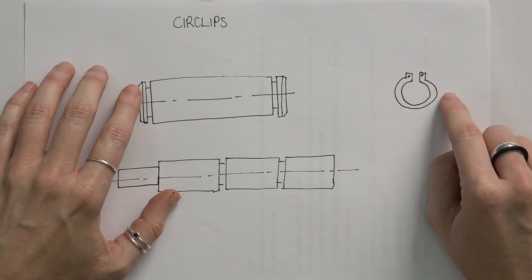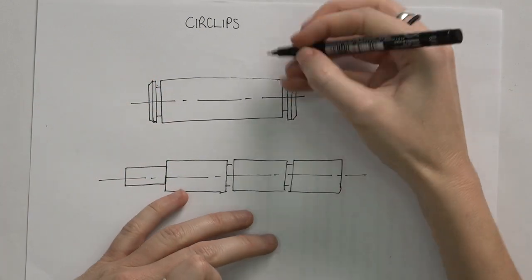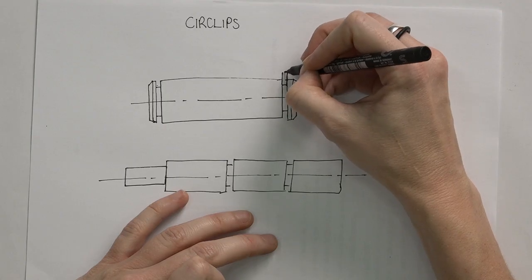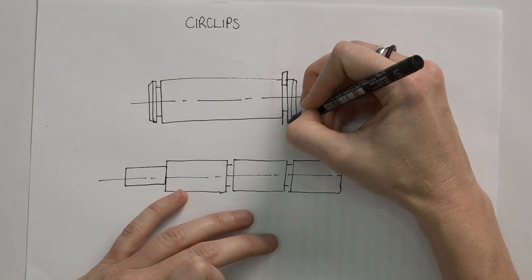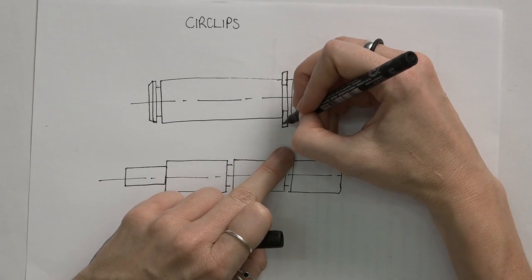Now an external circlip looks like this if you see it from the front, but when we draw it into the space here, we have it inside and it's slightly wider of course than the rest of the shaft, otherwise it can just fall right through.